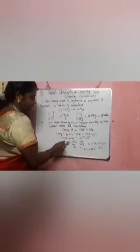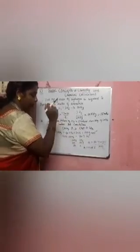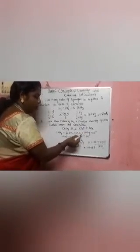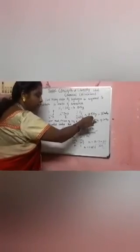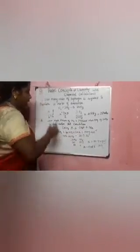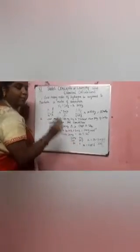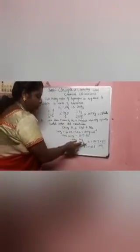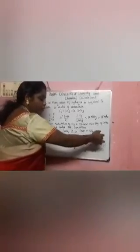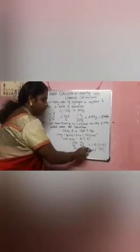Now relate calcium carbonate to carbon dioxide. For 100 g of CaCO3, we get 22.4 liters of CO2. For 50 g of CaCO3, how many liters of CO2 are produced? Cross multiply: x = (50 × 22.4) / 100 = 22.4 / 2 = 11.2 liters. So 50 g of CaCO3 produces 11.2 liters of CO2.